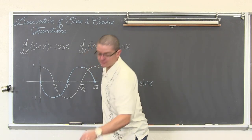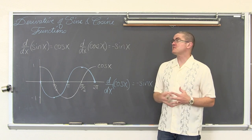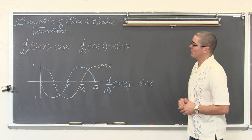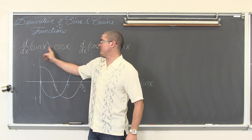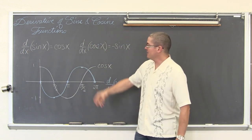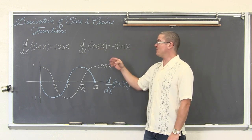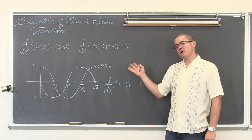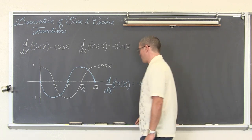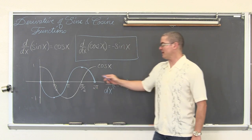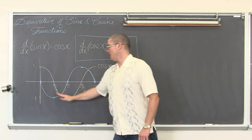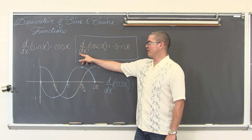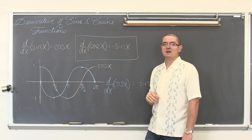Hi, I am Mr. Tarrou. In this video we are going to do three examples of finding the derivative of sine and cosine. We are going to worry about the other four trig functions in another video. The derivative with respect to x of sine of x is equal to cosine of x. The derivative with respect to x of cosine of x is equal to the negative of sine of x.